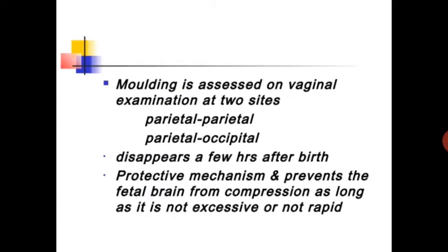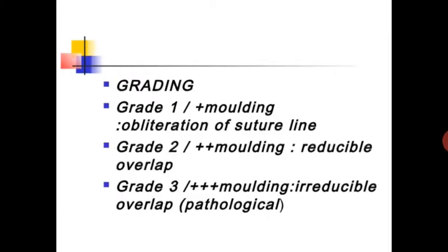Molding is assessed on vaginal examination. The suture lines at parietal-parietal and parietal-occipital disappear a few hours after birth. It is a protective mechanism that prevents fetal brain compression as long as it is not excessive or rapid. Grade 1 molding is obliteration of the suture line.